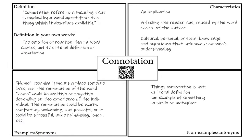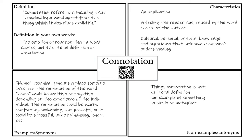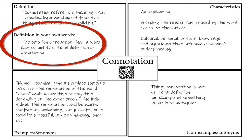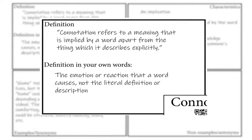The word we're going to use for this example is connotation, and as you can see, we have it right here in the middle of the model. You'll also see the QR code that students will use to access the working definition. When they access that link, we want them to write down the definition in the top left quadrant. Here we've copied the definition: connotation refers to a meaning that is implied by a word apart from the thing which it describes explicitly. From there, we want students to put the definition in their own words — here it's reworded as the emotion or reaction that a word causes, not the literal definition or description.